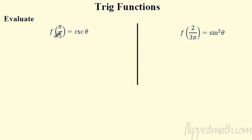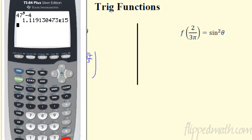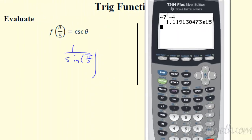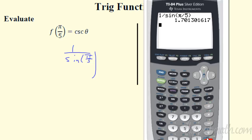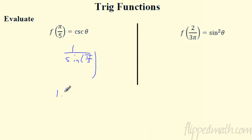Trig functions: when evaluating cosecant, remember cosecant is 1 over sine. So for f(π/5), you're really computing 1 divided by sin(π/5). We're always in radians, so plug that in: 1 ÷ sin(π ÷ 5). The answer is approximately 1.701. Whether you truncate or round here, you get the same thing.